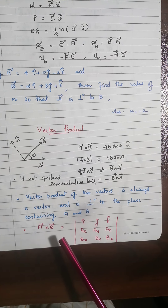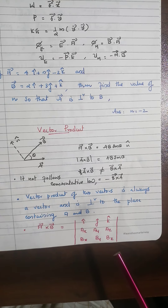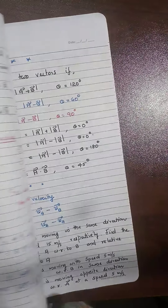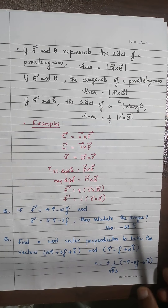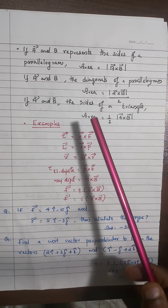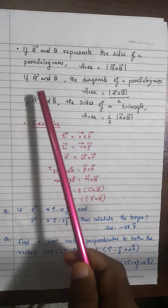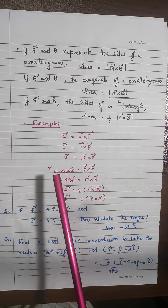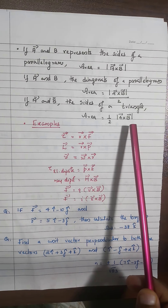To find A × B, use the determinant: |î ĵ k̂; Ax Ay Az; Bx By Bz|. Geometrical applications: if A and B represent the sides of a parallelogram, its area = |A × B|. If A and B represent the diagonals of a parallelogram, area = ½|A × B|. If A and B represent the sides of a triangle, area = ½|A × B|.